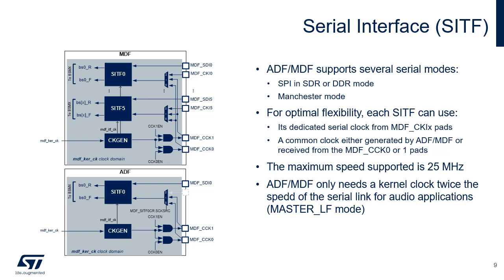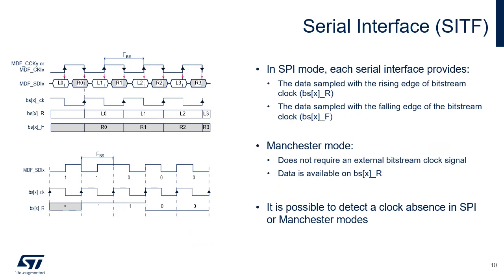MDF only needs a kernel clock twice the speed of the serial link rate for audio applications. In SPI mode, the serial interfaces sample the incoming data on the falling and rising edges of the serial clock. Each serial interface provides two data streams to the digital bitstream matrix: one representing the data sampled with the rising edge of the serial clock, the BSX-R signal, and one representing the data sampled with the falling edge of the serial clock, the BSX-F signal. In Manchester mode, the clock is recovered from the data stream. Valid data is available on the BSX-R output. A clock absence detection allows the application to detect if there's an absence of clock transition for a defined period of time.